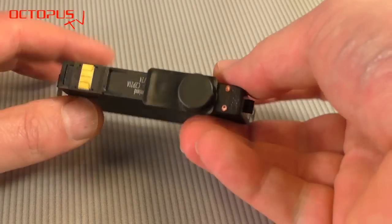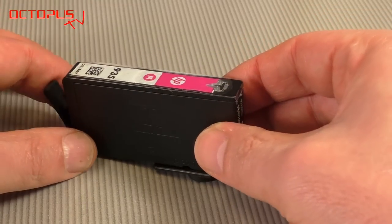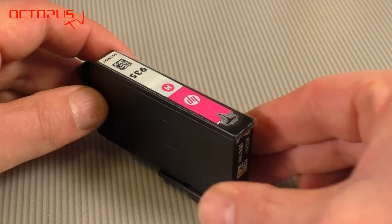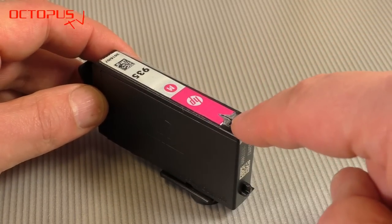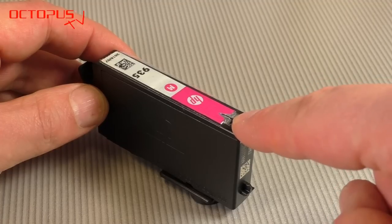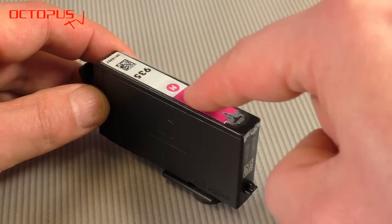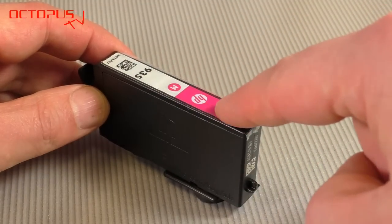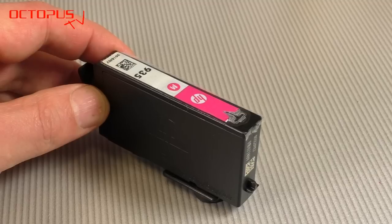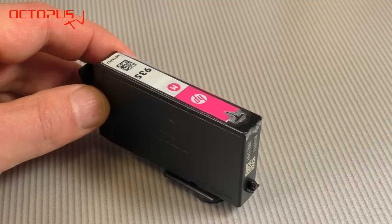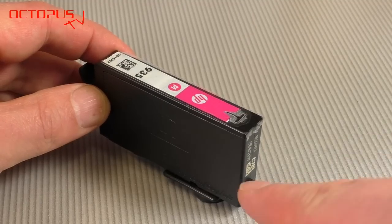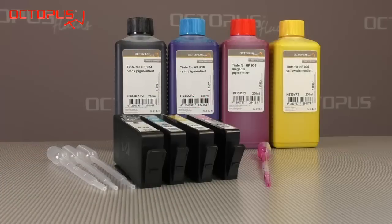The cartridge is refilled now but there is something you need to check. On the upper side you have an air port and an air duct that is located below the label on the upper side. Please make sure that the air port and the air duct as well are free of any ink or anything else. This makes sure that the ink can flow towards the printer head sufficiently.